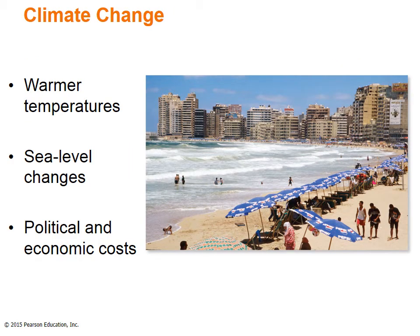Projected climate changes will aggravate already existing environmental issues within this region. Higher temperatures will cause higher overall evaporation rates, lower soil moisture, stress on crops and vegetation, reduction in crop yields such as wheat and corn, reduction in net runoff and hydroelectric potential, an increase in extreme weather events, heat-related deaths, rising sea levels, increased political conflict due to decreased water resources, and less developed areas will have a harder time adapting. The photo shows northern Egypt's low-lying coastline at Alexandria, which could change significantly if global sea levels rise.